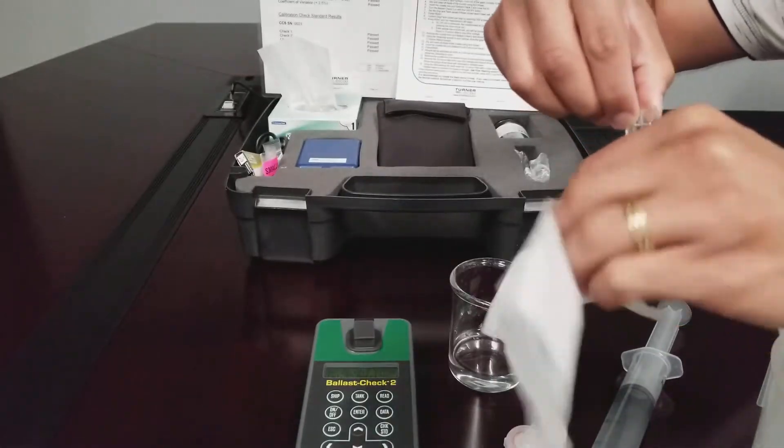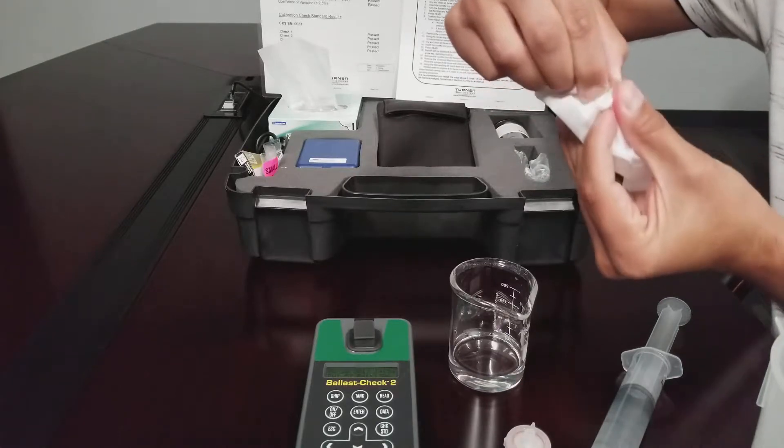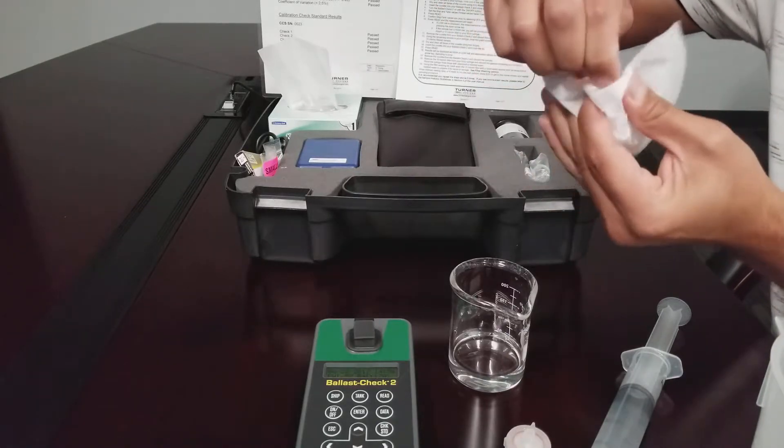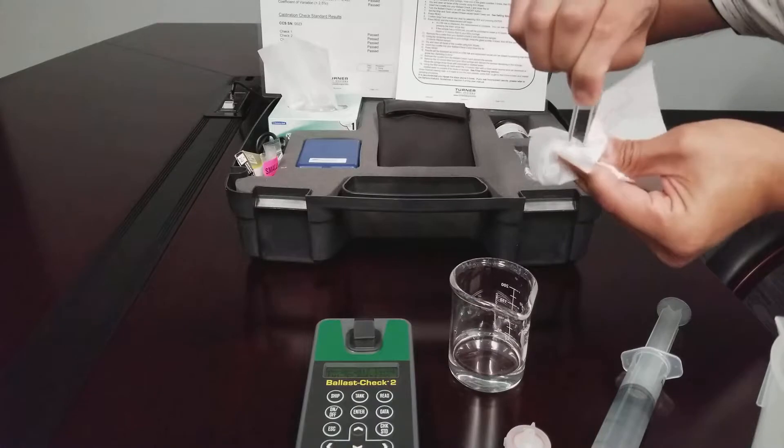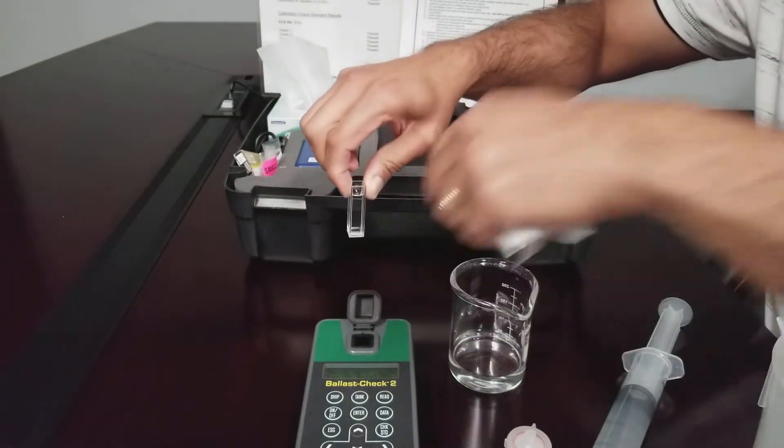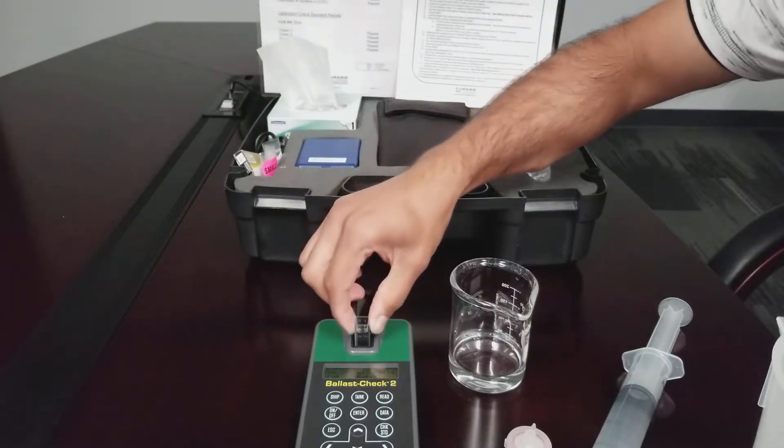Use a Kim Wipe to wipe down the sides of the cuvette to remove any moisture or fingerprints. Insert the cuvette into the sample compartment.